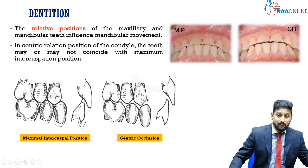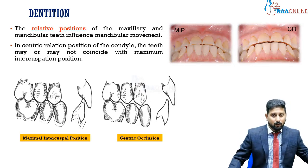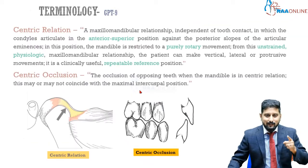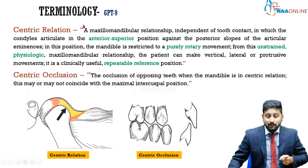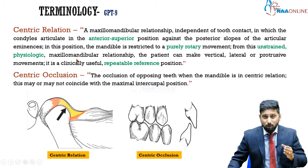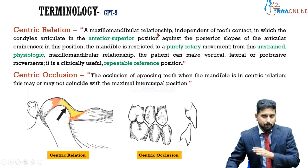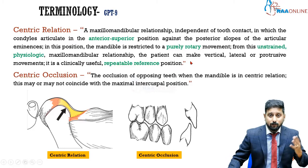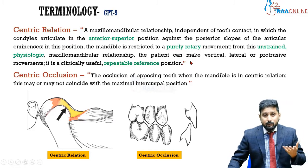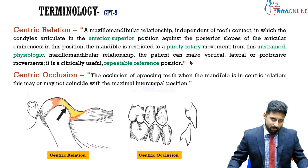Centric occlusion is the occlusion of the teeth that occurs when the mandible is in centric relation position. Centric relation position is a bone-to-bone position — a maxillary-mandibular relationship independent of tooth contact — so it exists even in completely edentulous patients.